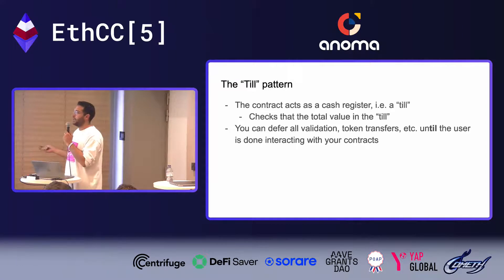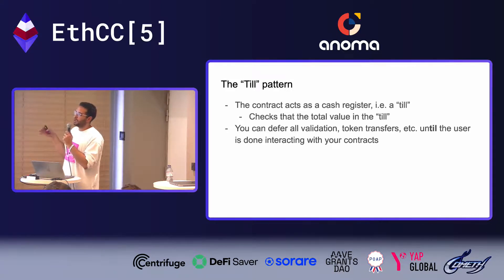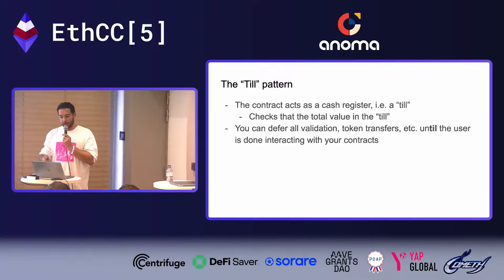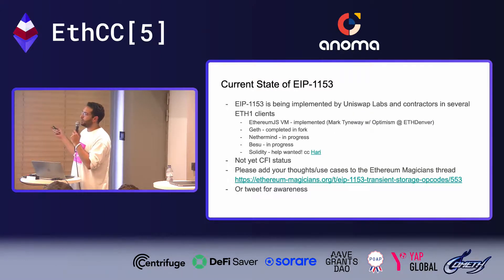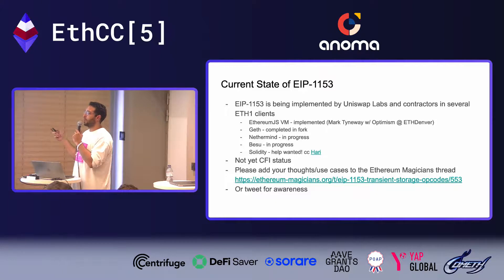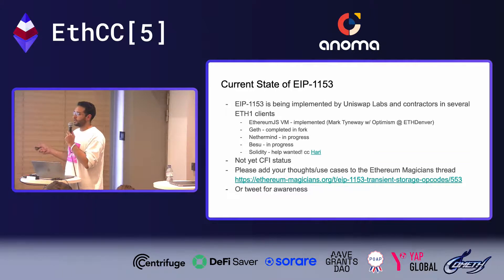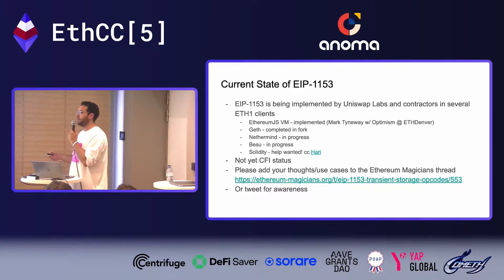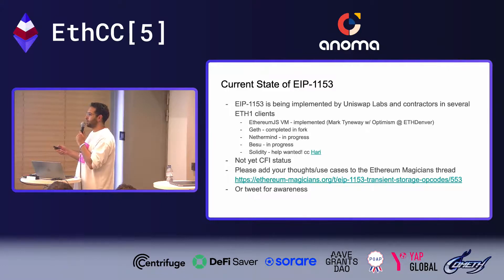You can call this the 'till' pattern — it acts like a cash register till. You check the total value in the till, and because you're deferring all validation until the end it's also like 'until' the user is done interacting with your contracts. This is being implemented mostly by Uniswap Labs, with contractors. Mark Tyndale kicked it off from Optimism at ETH Denver hackathon, starting the Ethereum JSVM. Geth has completed fork logic. Hari just implemented the assembly opcodes in Solidity, and you can test against it today using a specific Hardhat package version.